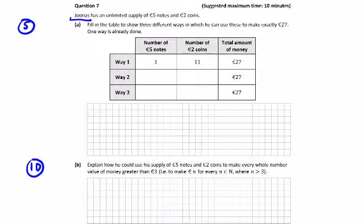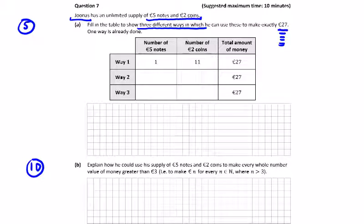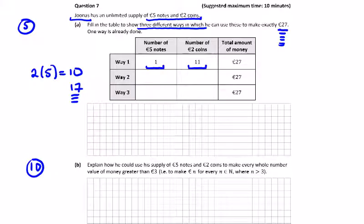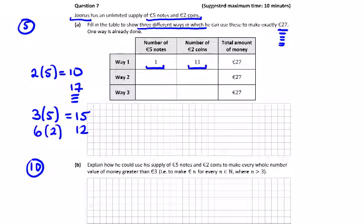Question 7: Junas has an unlimited supply of €5 notes and €2 coins. Fill in the table to show three different ways to make exactly €27. Way one is given: one €5 note and eleven €2 coins. For way two, a bit of trial and error — two €5 notes is €10, leaving €17 which can't be made with €2 coins, so it has to be an odd number of €5 notes. Three €5 notes is €15, leaving €12, which is six €2 coins — that works.